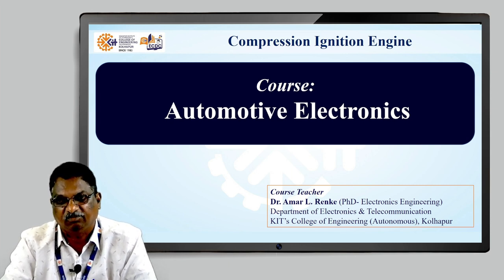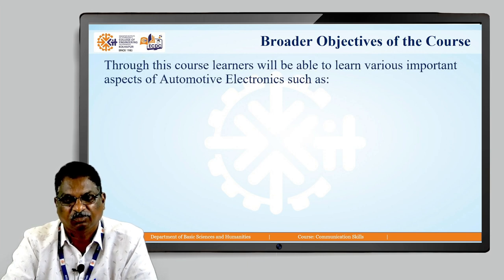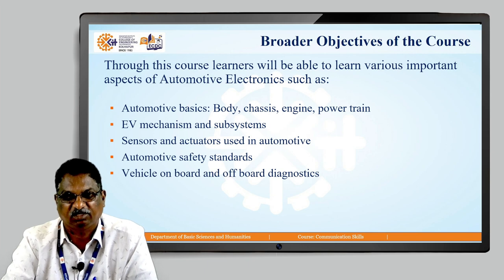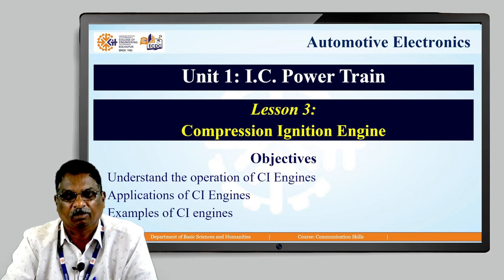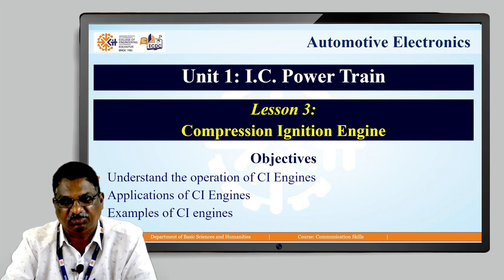Today we are going to discuss the compression ignition engine, that is CI engine. These are the broader objectives of the course. We have already seen in the previous lectures: Automotive Basics, EV Mechanism, Sensors and Actuators, Automotive Safety Standards, and Onboard and Offboard Diagnostics. Lesson number 3 is compression ignition engine. The objectives are understanding the operation of CI engines, application of CI engines, and examples of CI engines.